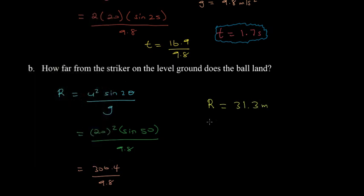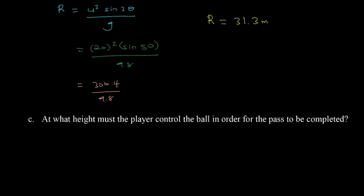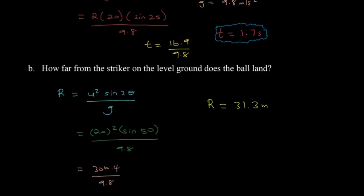If the horizontal range is 31.3 meters and we were told that the striker was 30 meters from the midfielder, the ball will land at some displacement in reference to the player. It's going to be equal to 31.3 meters minus 30 meters, so s will be 1.3 meters. Therefore, the ball would land 1.3 meters from the striker.